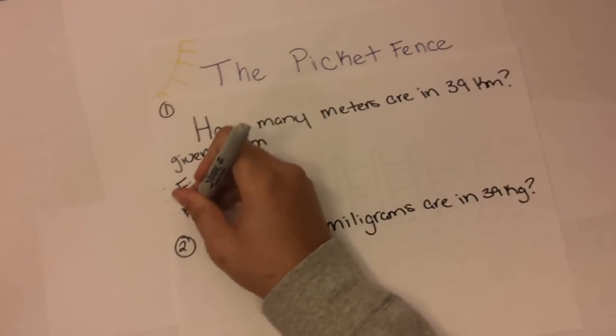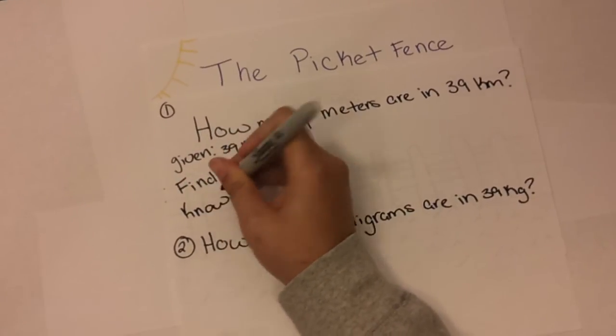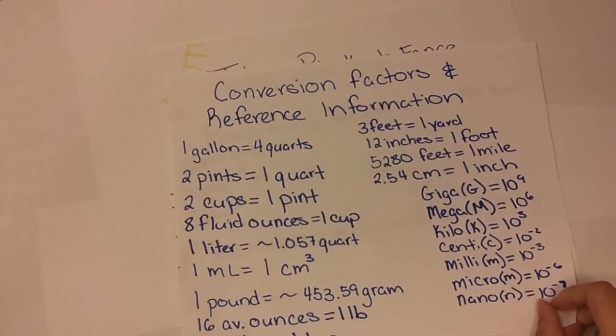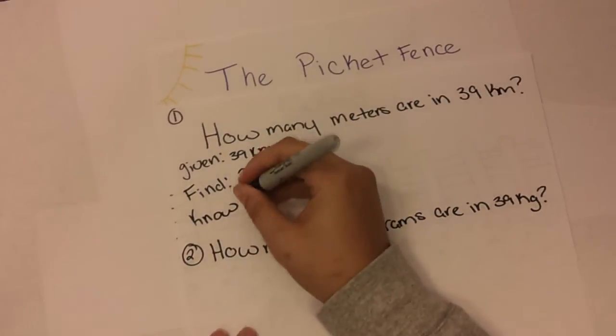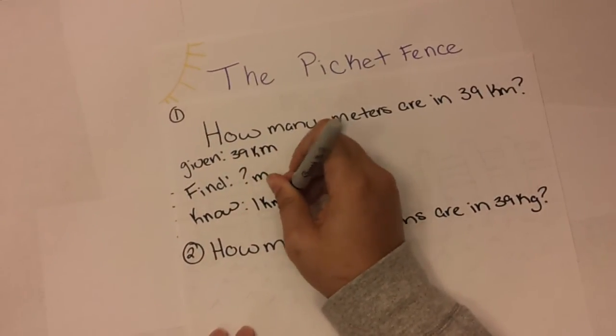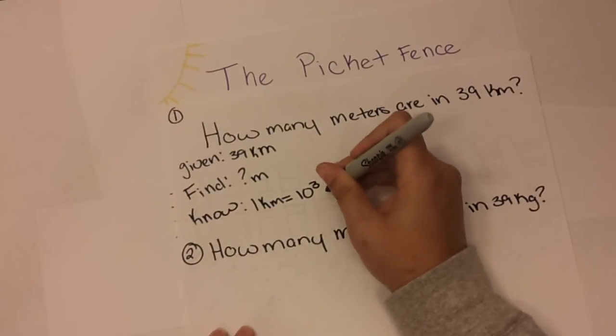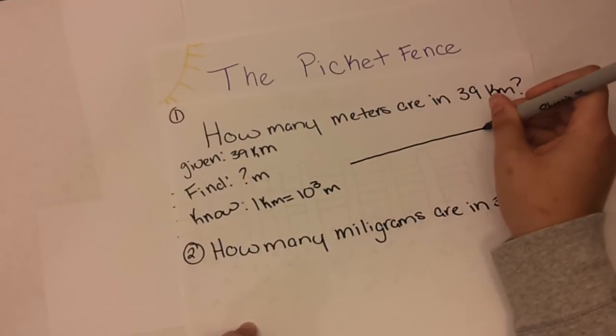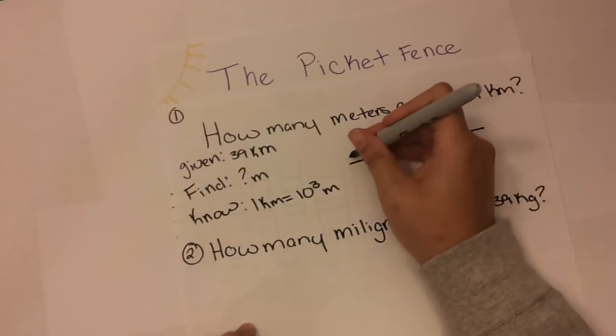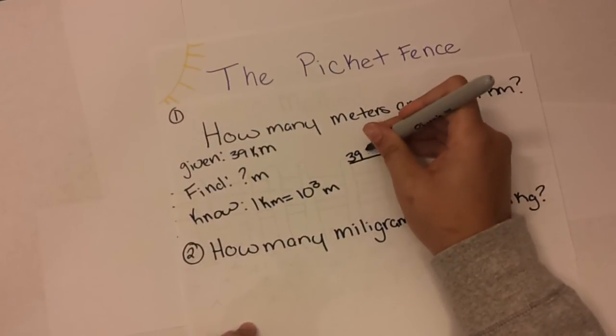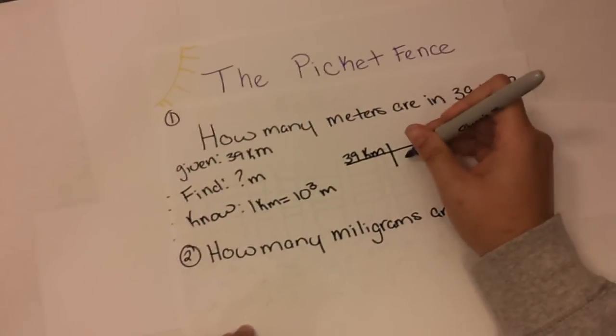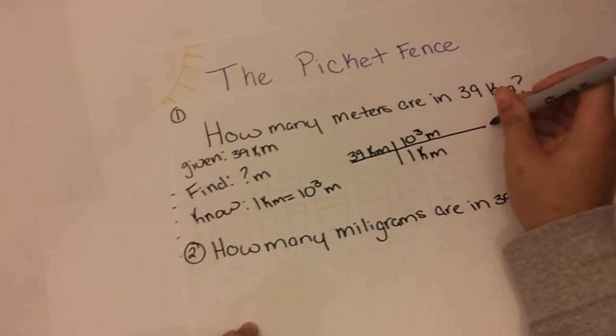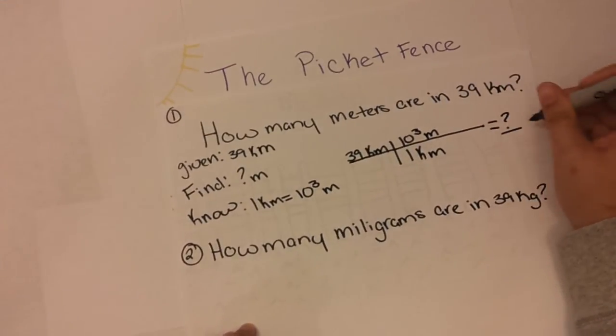So we know by using our conversion factor sheet that there is one kilometer to 10 to the third meters. So we're going to draw out our picket fence and we know that there is 39 kilometers, and one kilometer per 10 to the third meters, which equals how many meters.